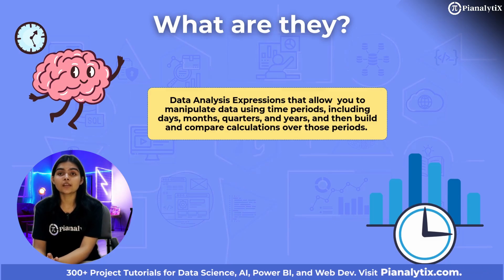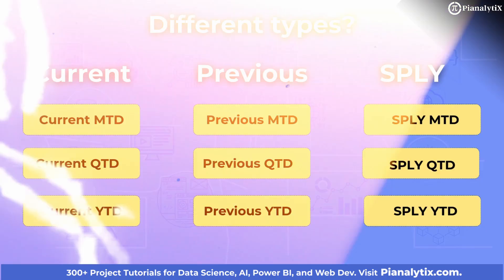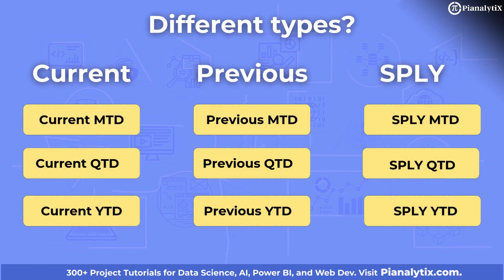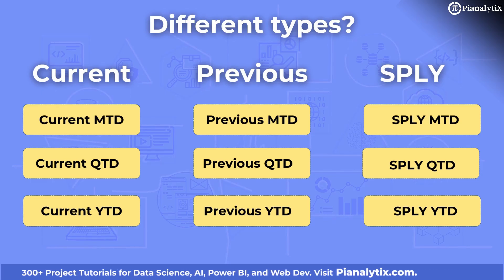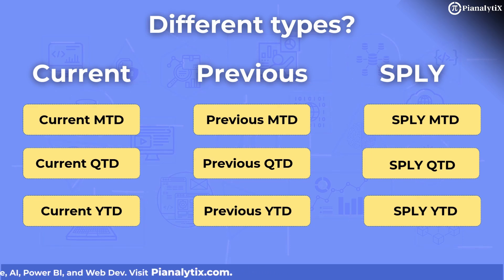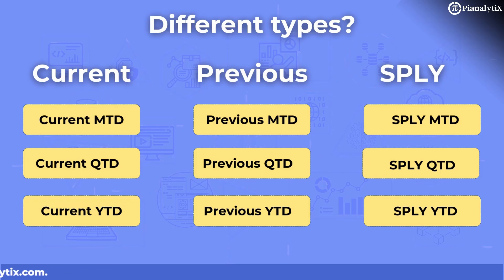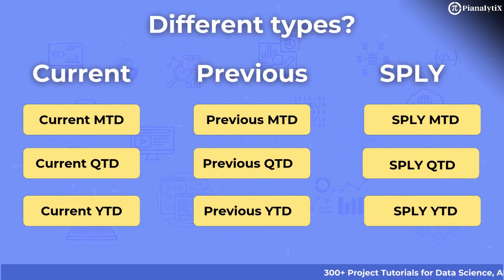Let's jump right into the tutorial because the definition might be a little too technical and confusing. In this tutorial I will be calculating a total of nine measures: current MTD, QTD, YTD; previous MTD, QTD, YTD; and also MOM, QOQ, and YOY, which are same period last year MTD, QTD, and YTD. I will go through each one of them one by one.